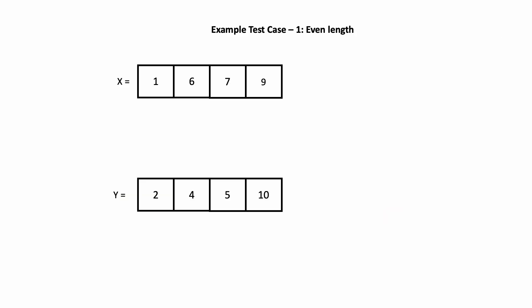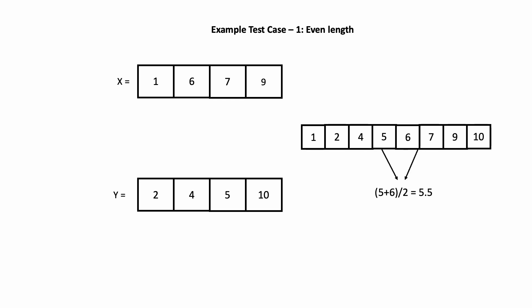Let's understand how to use the idea of partitioning arrays using binary search to get to the expected output with this test case, where x is [1, 6, 7, 9] and y is [2, 4, 5, 10]. The length of the two arrays is even. The expected output is 5.5, because if you merge and sort the two arrays, the average of the middle values is 5.5.